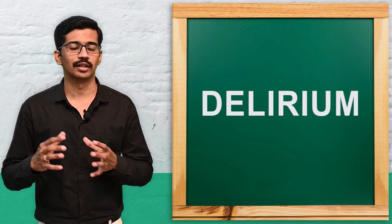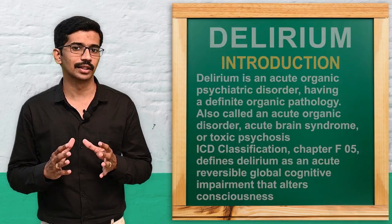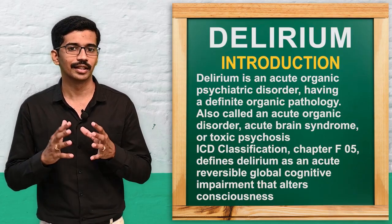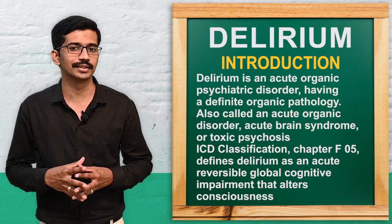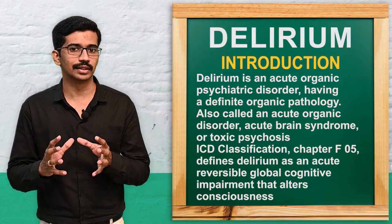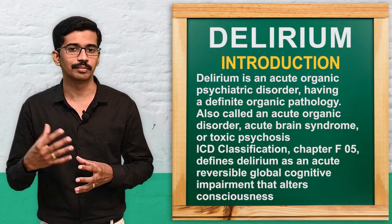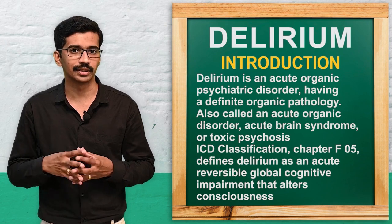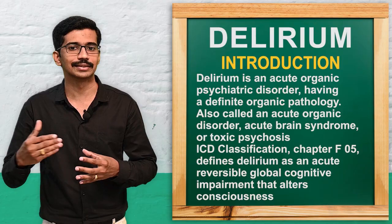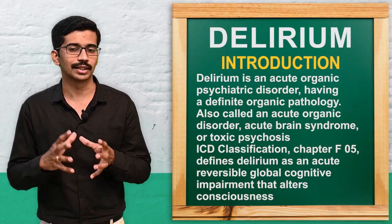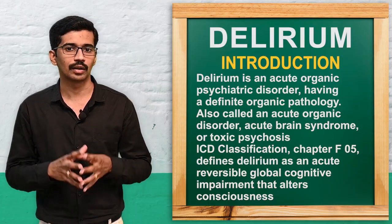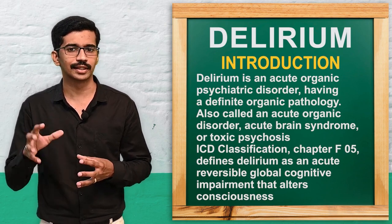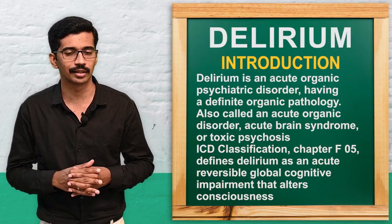Hello everyone, the topic we cover today is delirium. Delirium is an acute organic psychiatric disorder. It is called an organic disorder because it has a definite organic etiology or pathology. The word delirium is derived from a Latin word 'delirer' that means to become crazy. The patient will have increased psychomotor activity, disturbance, and disorientation. Delirium is otherwise called acute organic disorder, acute brain syndrome, or toxic psychosis. In psychiatry, ICD classification chapter F05 describes delirium.